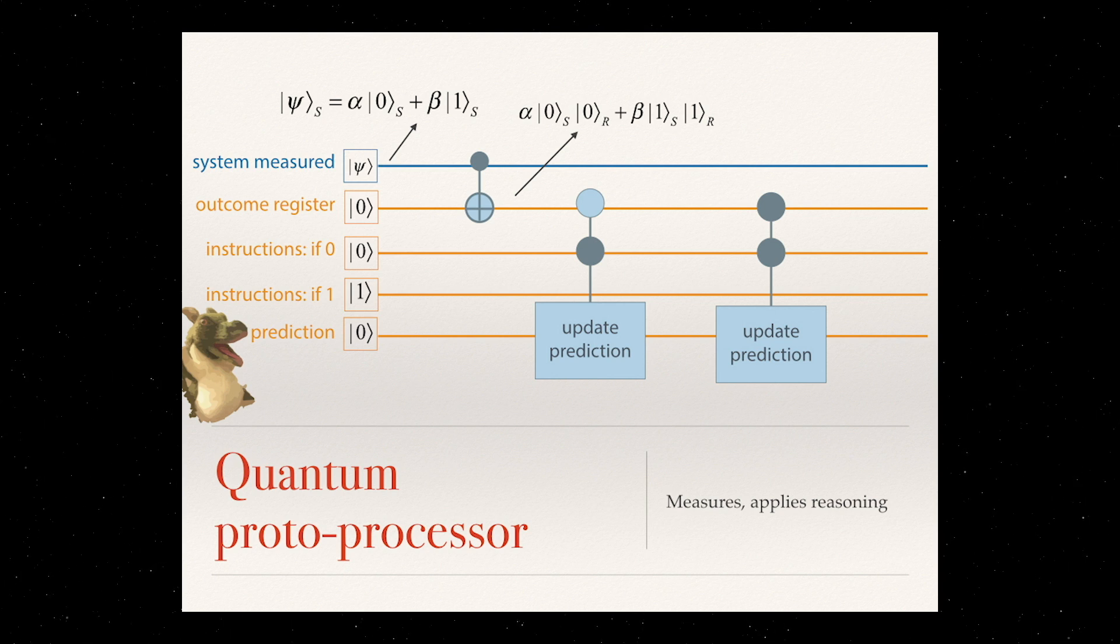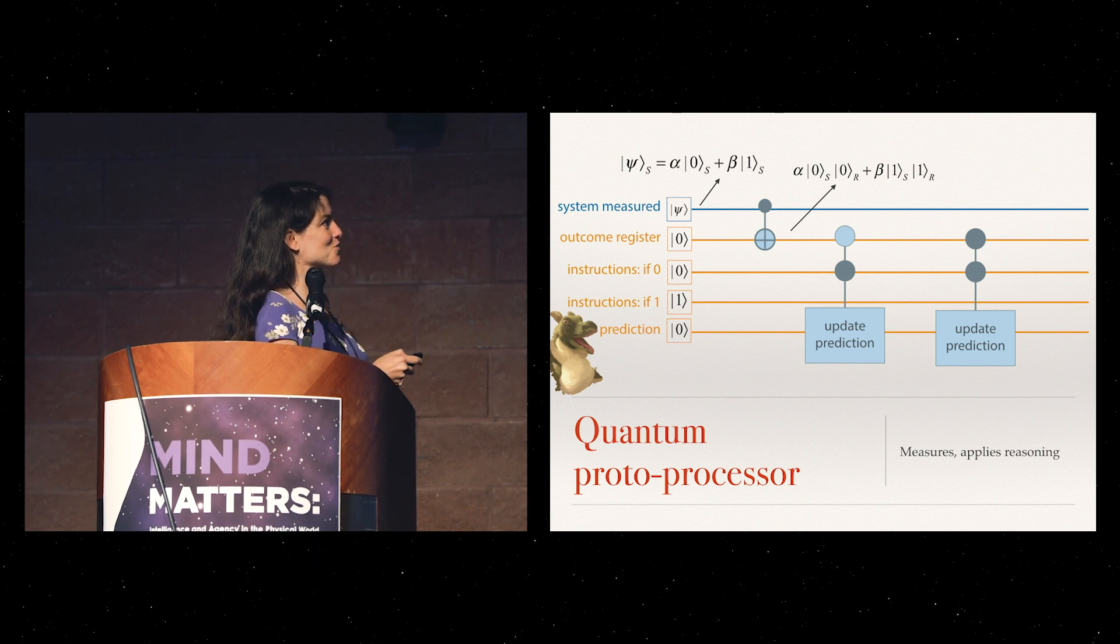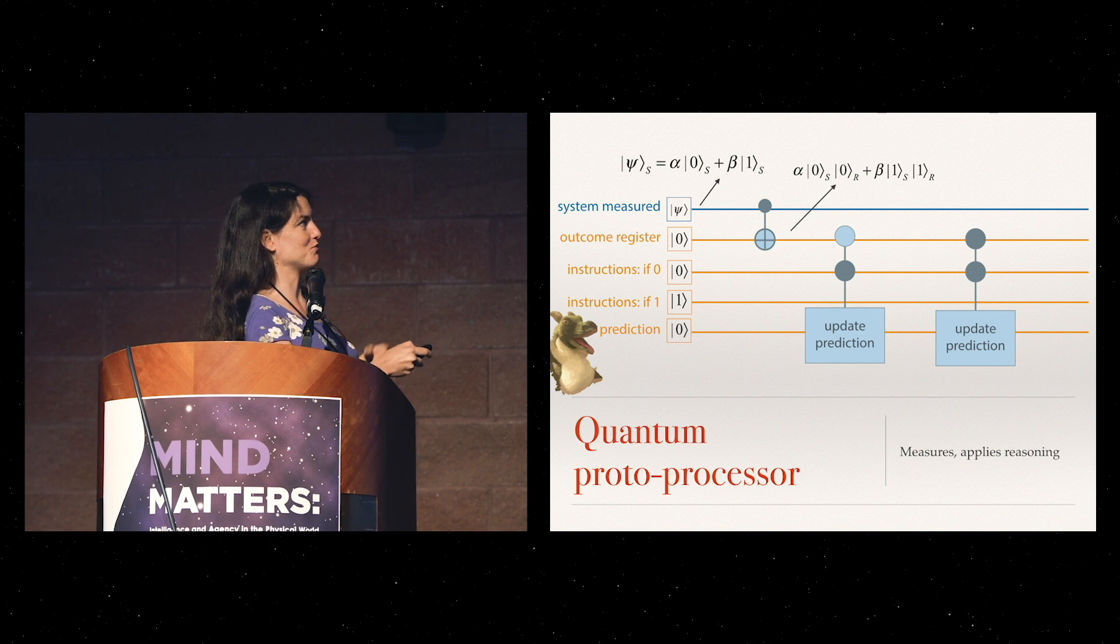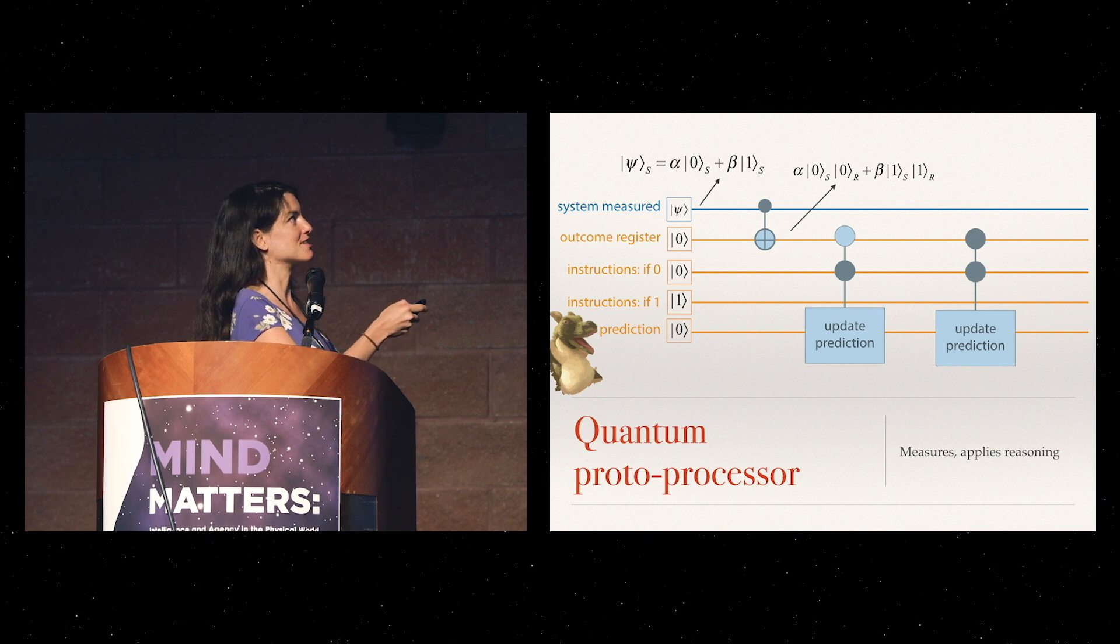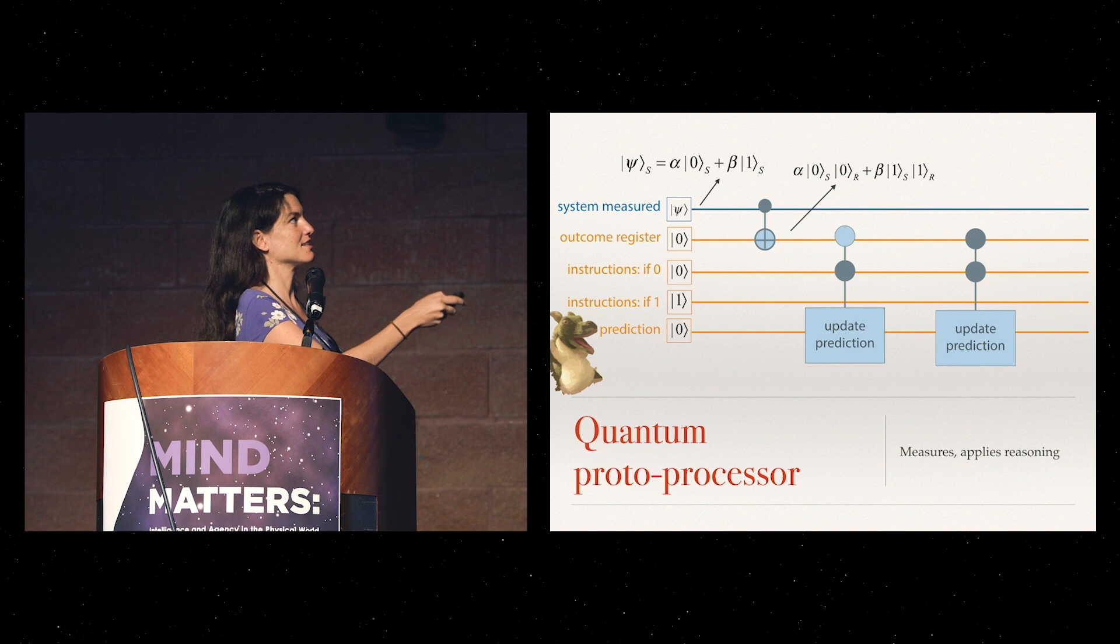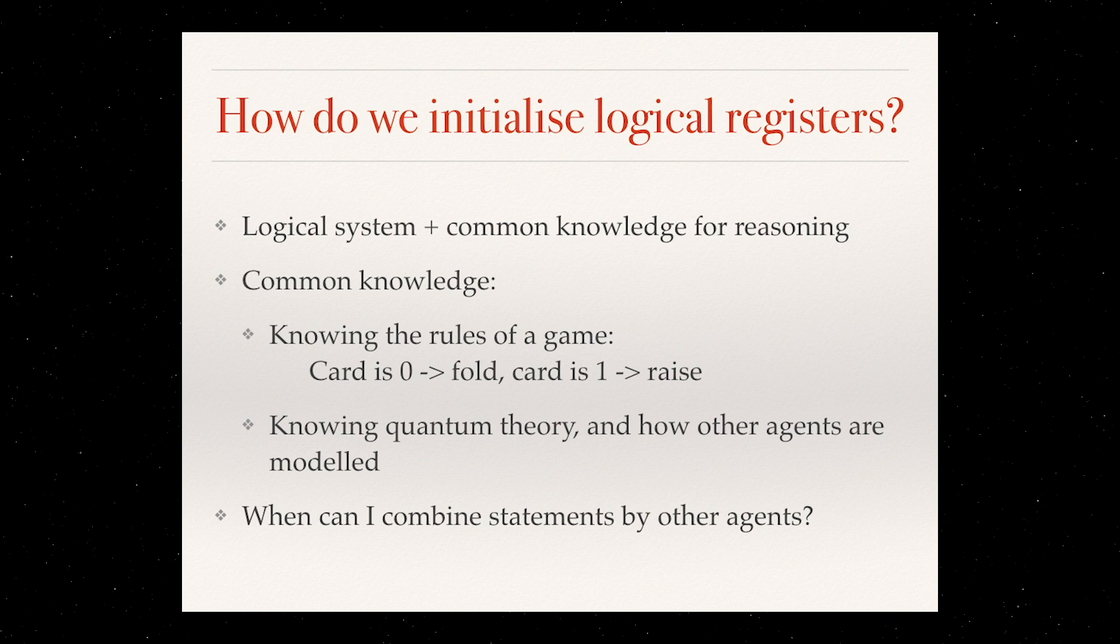What is the physical evolution that each agent undergoes and their own special perspectives going to just these instructions of what to do if this is zero, what to do if this is one. In the end, they'll be in a superposition of seeing zero and updating the prediction accordingly and seeing one and updating the prediction accordingly. Now what we put into these logical registers, this is all the things that we may later want to play with and change when you're testing different physical theories. We need the logical system and the common knowledge, which is essentially the physical theory that they're using, which in the case of a game could be just knowing the rules of a game and knowing that it's a good idea to fold if the card is zero and to raise if the card is one.